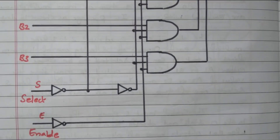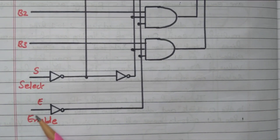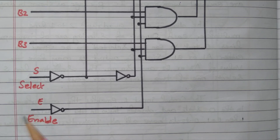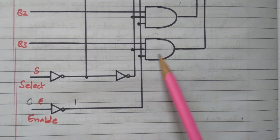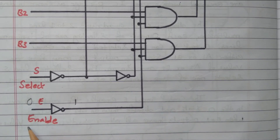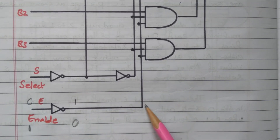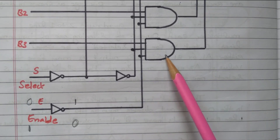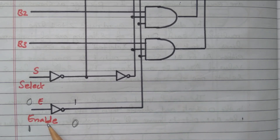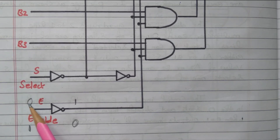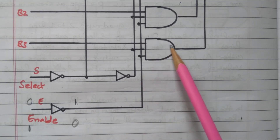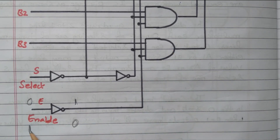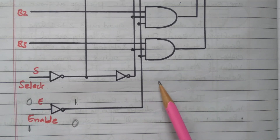Now we will look at the enable input and selection line. The enable input is connected through a NOT gate. Enable = 0 means after the NOT gate it becomes 1, so the 1 is given to all AND gates and the circuit is activated. If enable = 1, after the NOT gate it becomes 0, so the output of all NOT gates is 0 and the circuit is deactivated. So enable 0 means the circuit is activated and you will get either data A or data B at the output; enable 1 means the circuit is deactivated.